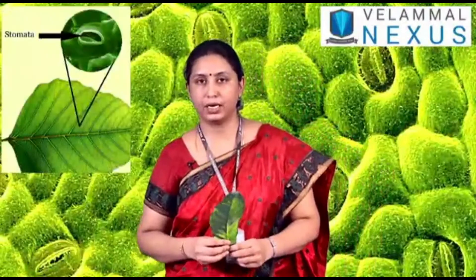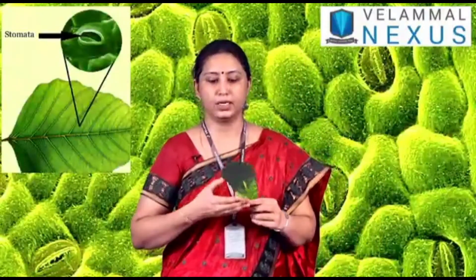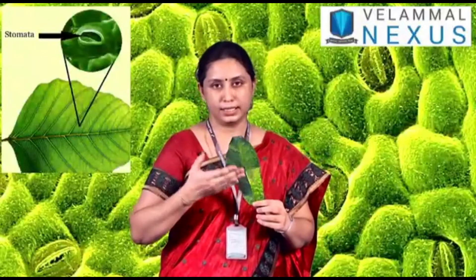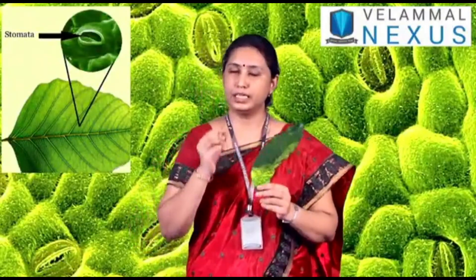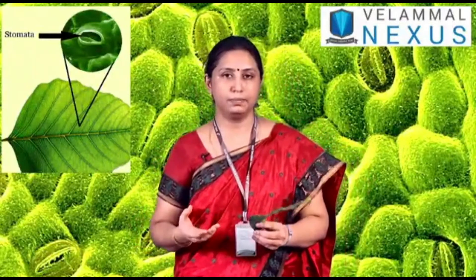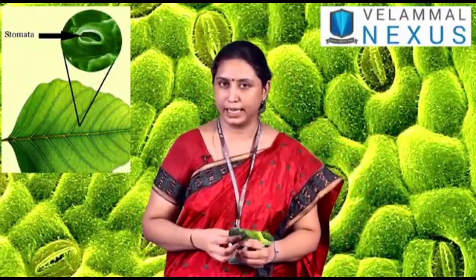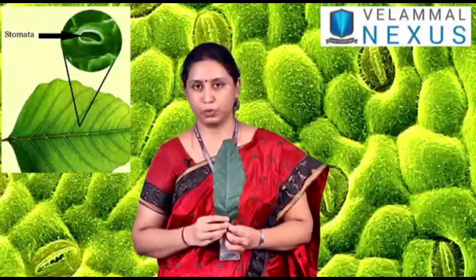The next important part we are going to see is the stomata. Stomata are the small, tiny openings beneath the surface of the leaf. Stomata are very tiny pores, so we cannot see them with our naked eye. We need a microscope to view these pores.